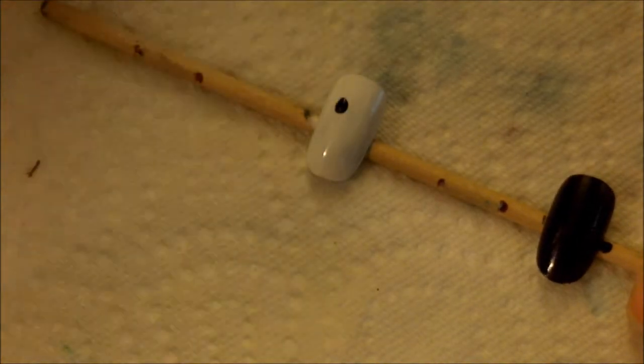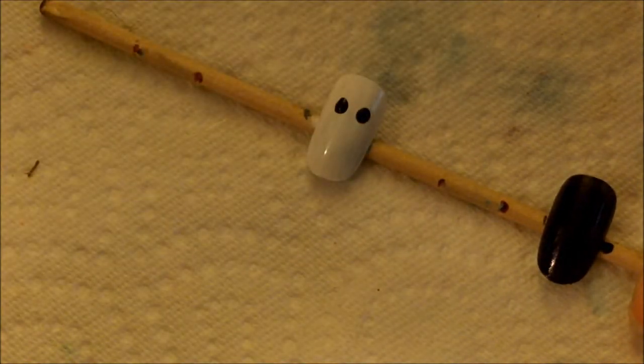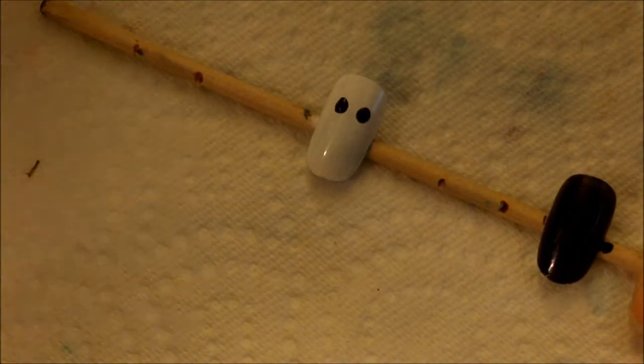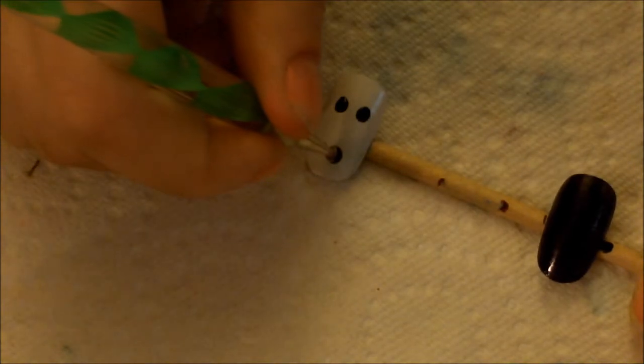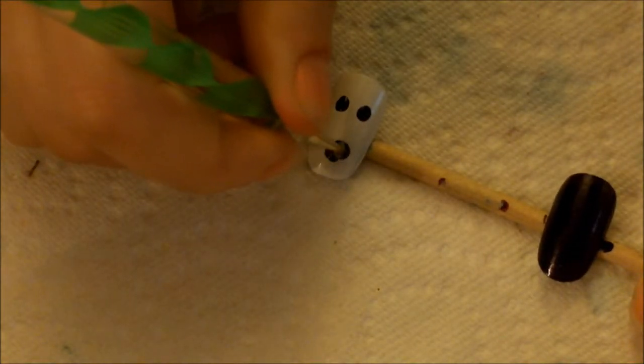We're going to take that on our dotting tool. I'm using a large dotting tool by the way, whatever size you prefer is okay. I'm going to make two eyes at the top of my nail, then taking that again and making a mouth. You can make it go down, but I decided I wanted to make mine into a bigger circle.